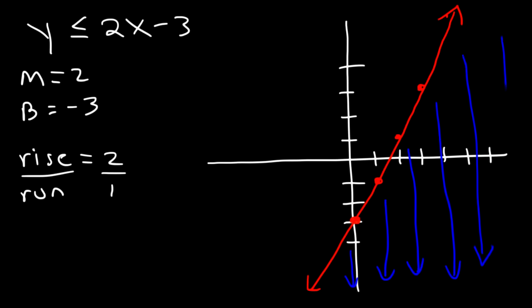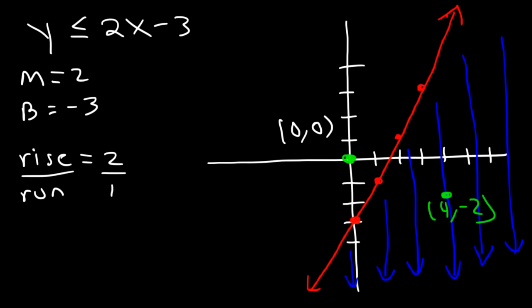Another way to determine where to shade is by using test points. Let's choose two test points: the first being the origin (0, 0), and another one — let's choose the point (4, -2). If the equation is true when you plug in the point, then you should shade in that region. If it's not true, do not shade it.